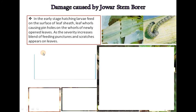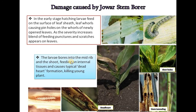These figures show damage caused by the stem borer. In the early stage, hatching larvae feed on the surface of the leaf sheaths and leaf rolls, causing pinholes on the rolls and newly opened leaves. As the severity increases, a blend of feeding punctures and scratches appear on the leaves. The larvae bore into the mid rib and the shoot, feeding on internal tissues and causing typical dead heart formation, killing young plants.